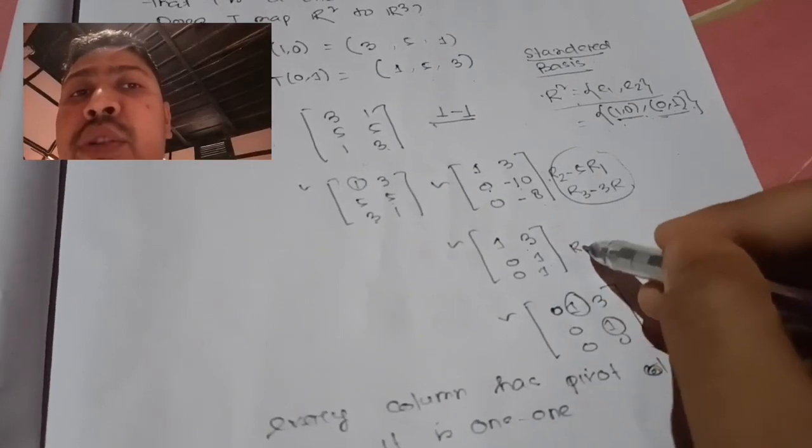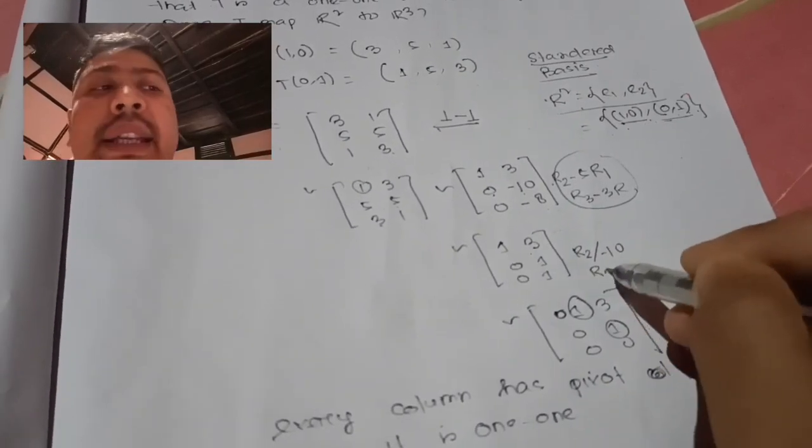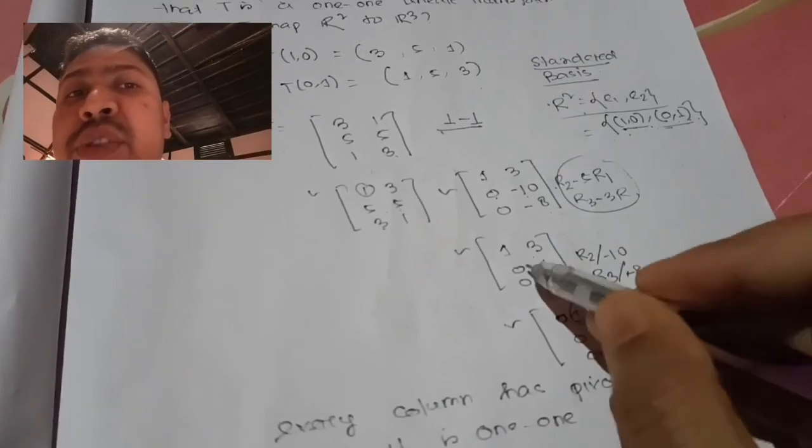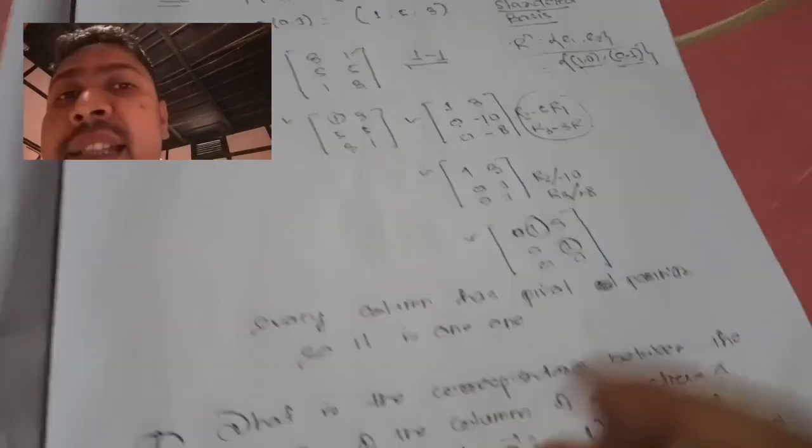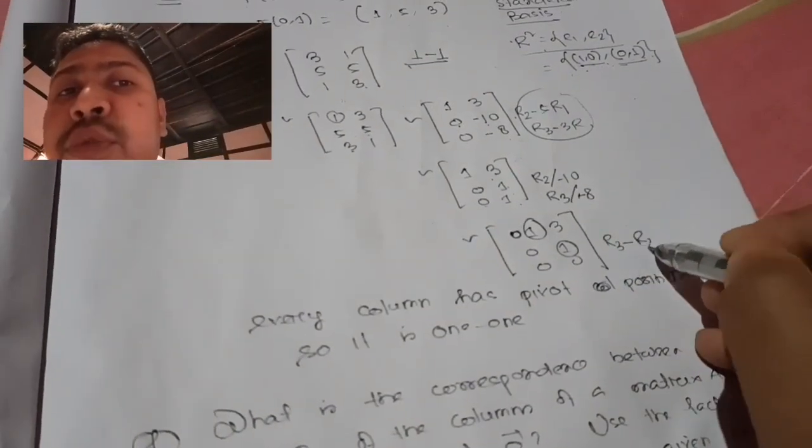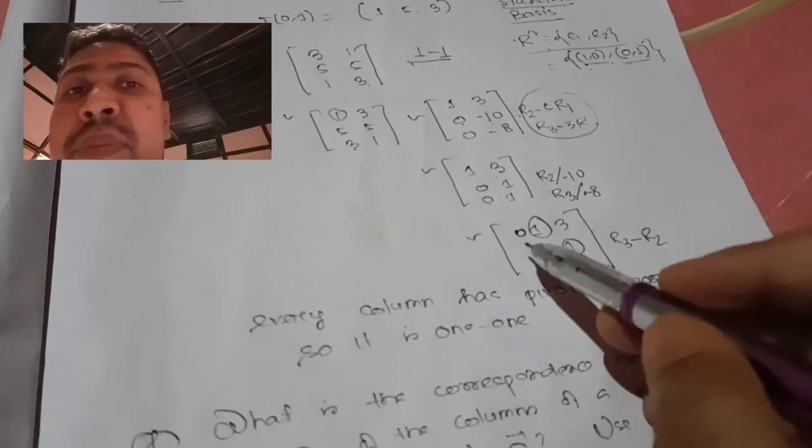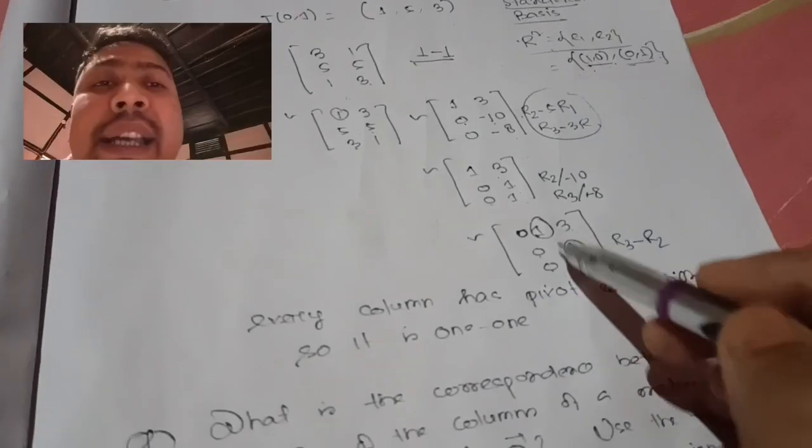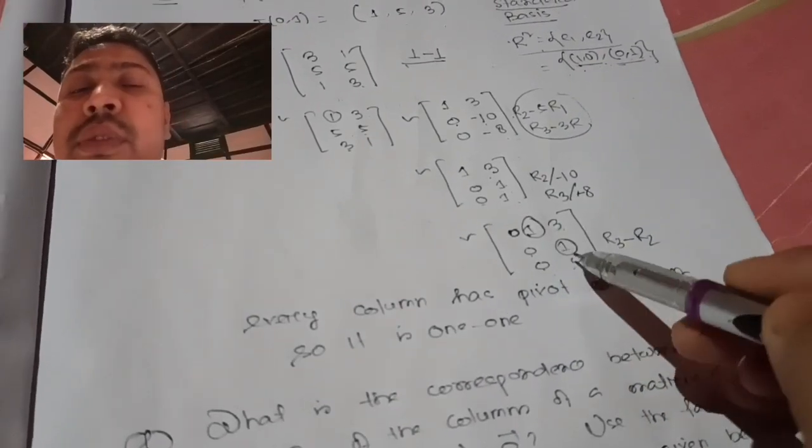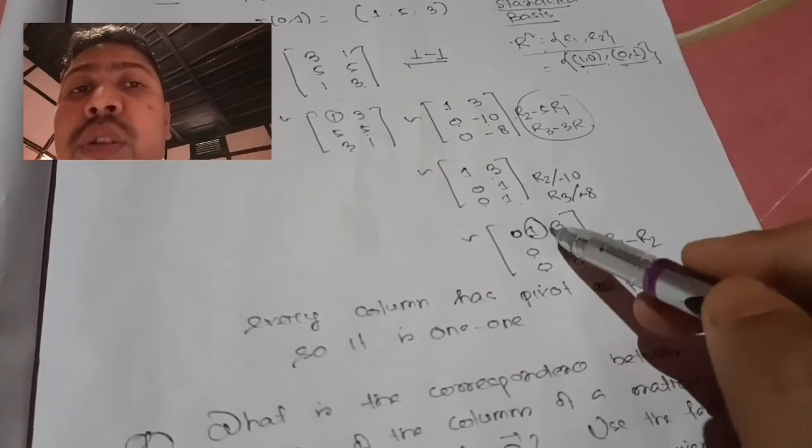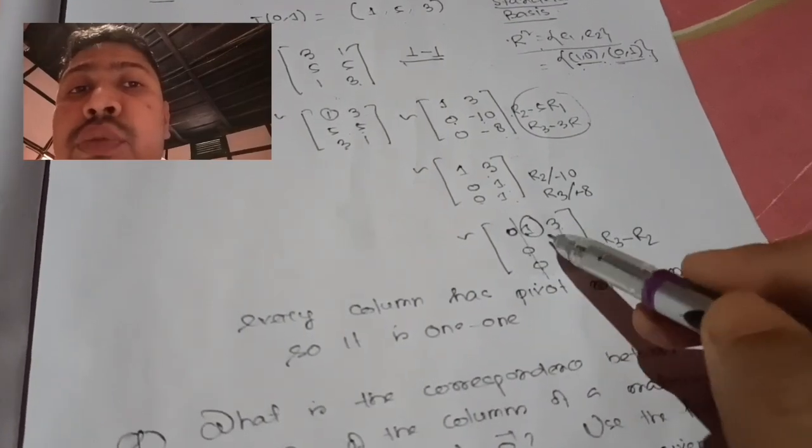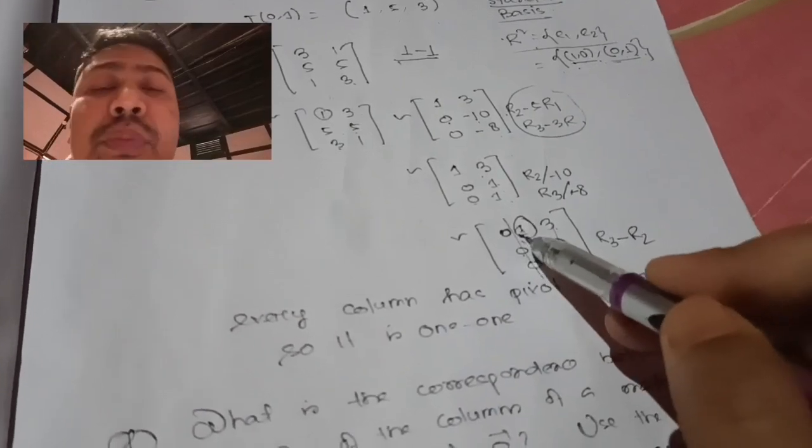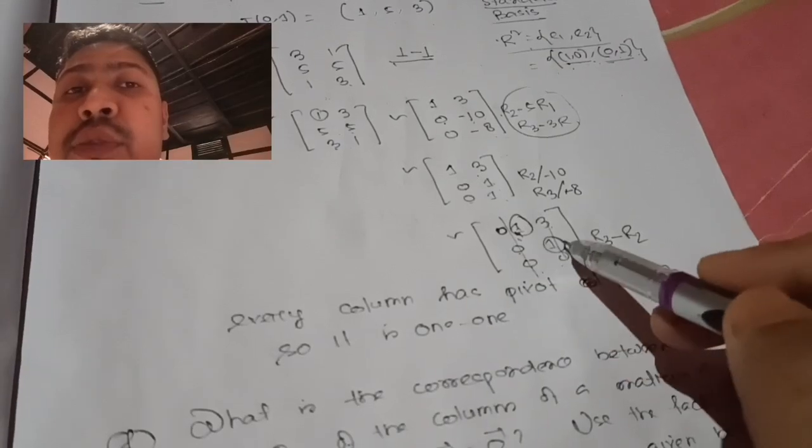Next transformations: R₂ divided by -10 and R₃ divided by -8 to get leading ones. Then R₃ - R₂ gives [1 3; 0 1; 0 0]. This is the final reduced row echelon form.